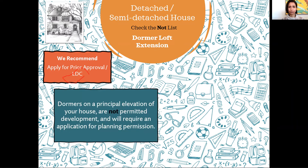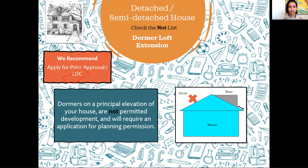Dormers are not permitted development on a principal elevation — that means the front face of your house that faces a road, street, or highway. If you want this, you need to put in a formal planning application with your local council. What you can do is at the rear — you can insert a dormer at roof level under PD rules. At the front you cannot do that, and I dare say I've never seen the council give permission for such a thing even then.